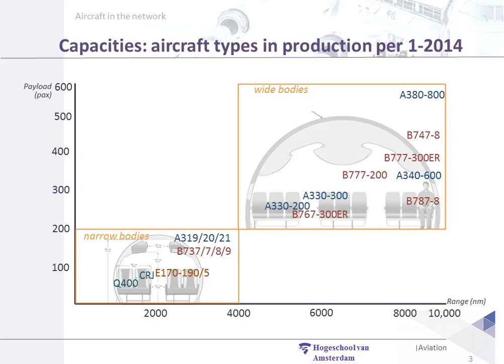There are a lot of different aircraft types but we can categorize these aircraft types in two main areas: the narrow bodies — small aircraft, small distances, small capacity — and the wide body aircraft, with large capacities up to 600 passengers and long distances. So we're going to look at what are the differences between those two.